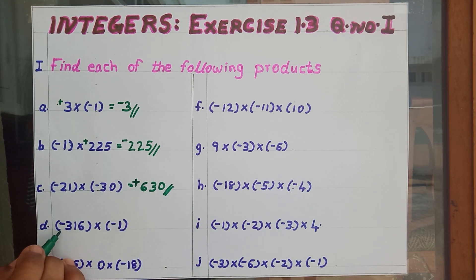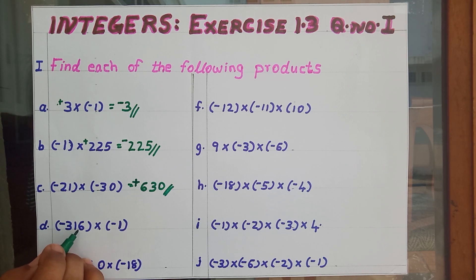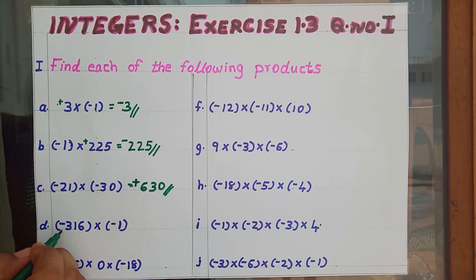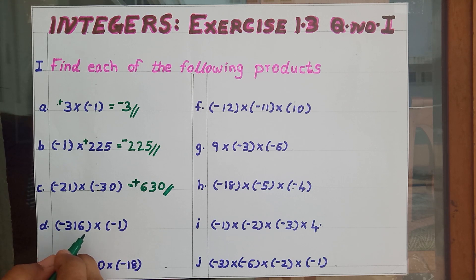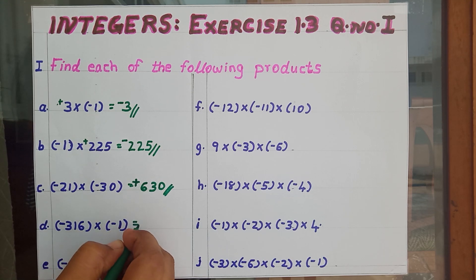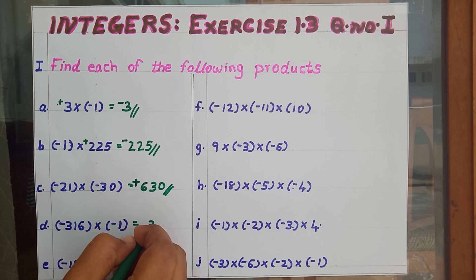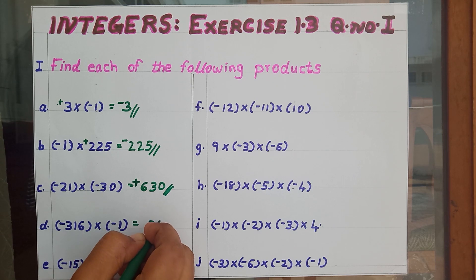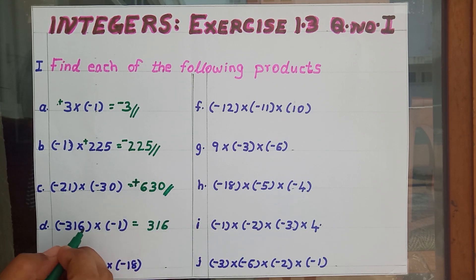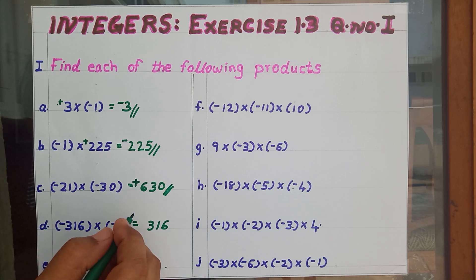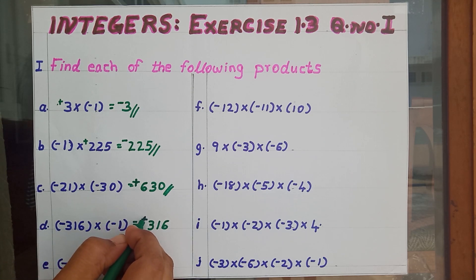Then minus 316 into minus 1. First find 316 into 1. What will be the answer? 316. Then multiply the signs: minus into minus gives plus.